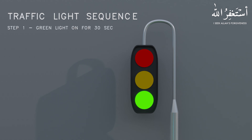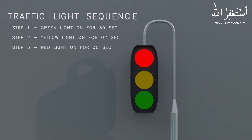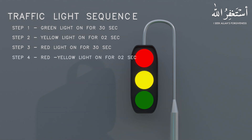Step one is to turn on the green light for 30 seconds. Step two is to turn on the yellow light for two seconds. Step three is to turn on the red light for the next 30 seconds. Step four is to turn on the red and yellow lights for two seconds. After step four is completed, the program goes back to step one and the cycle continues.